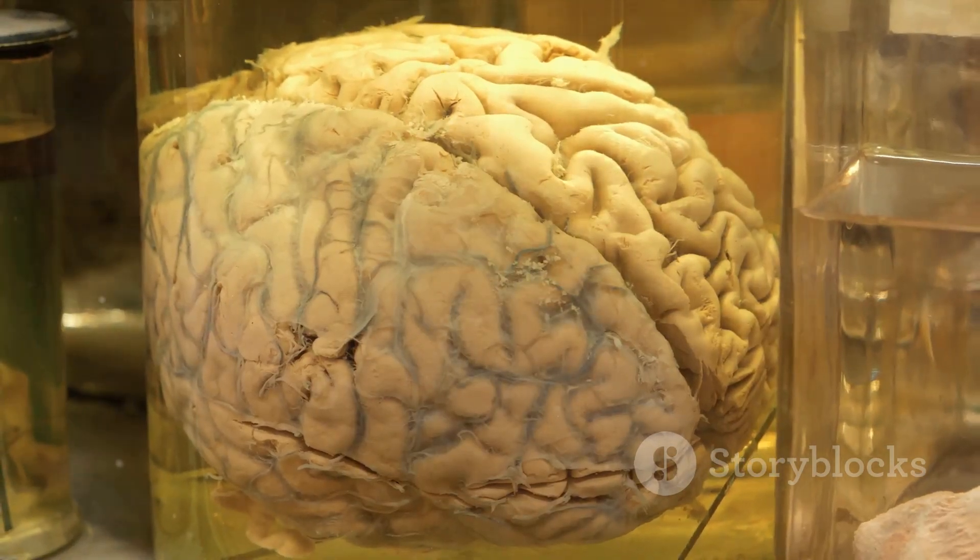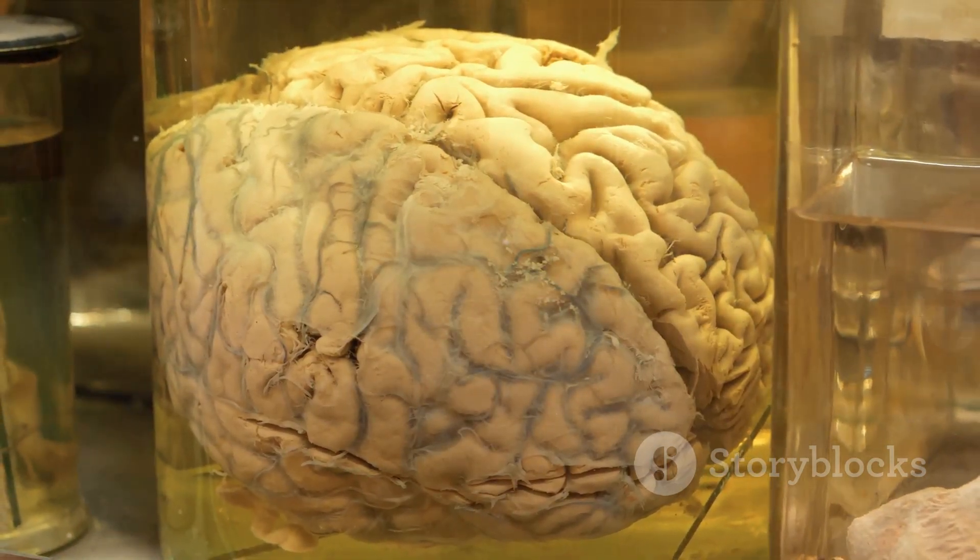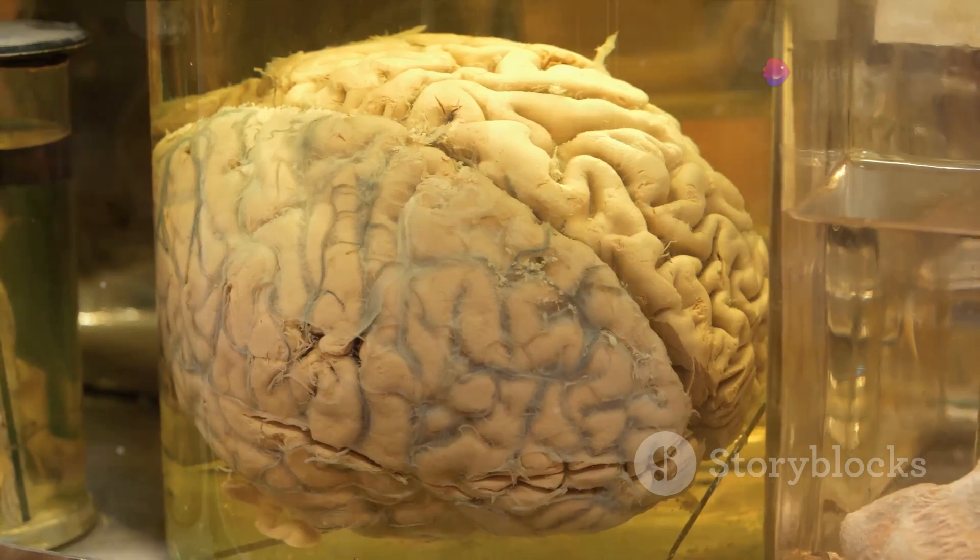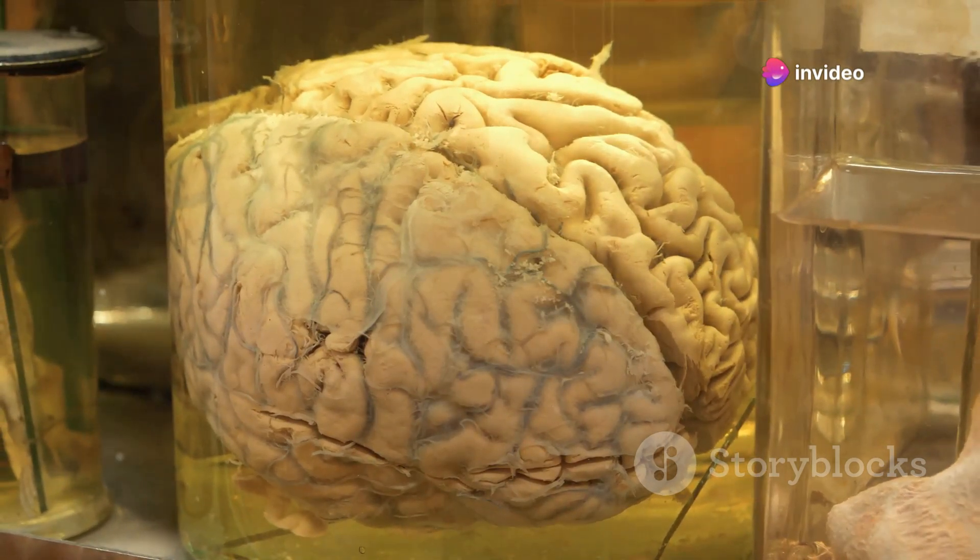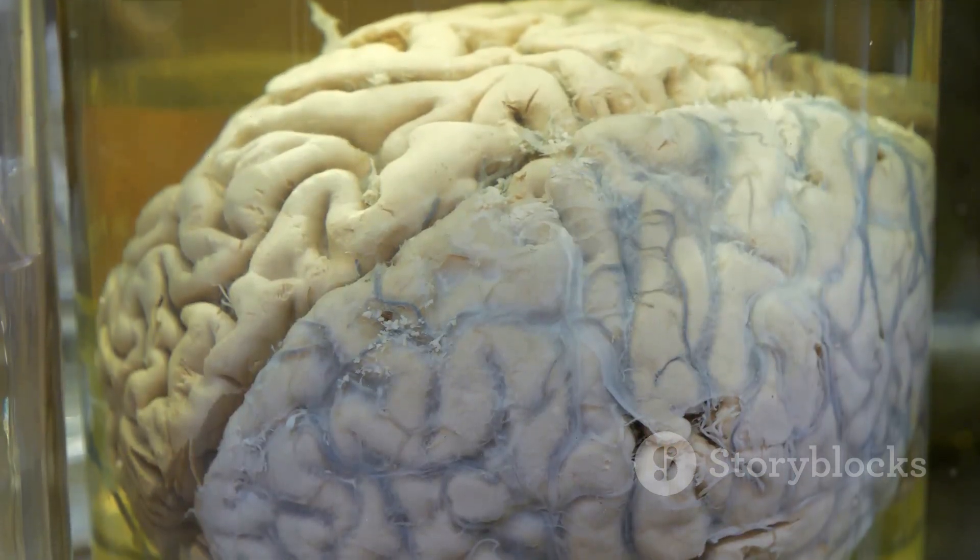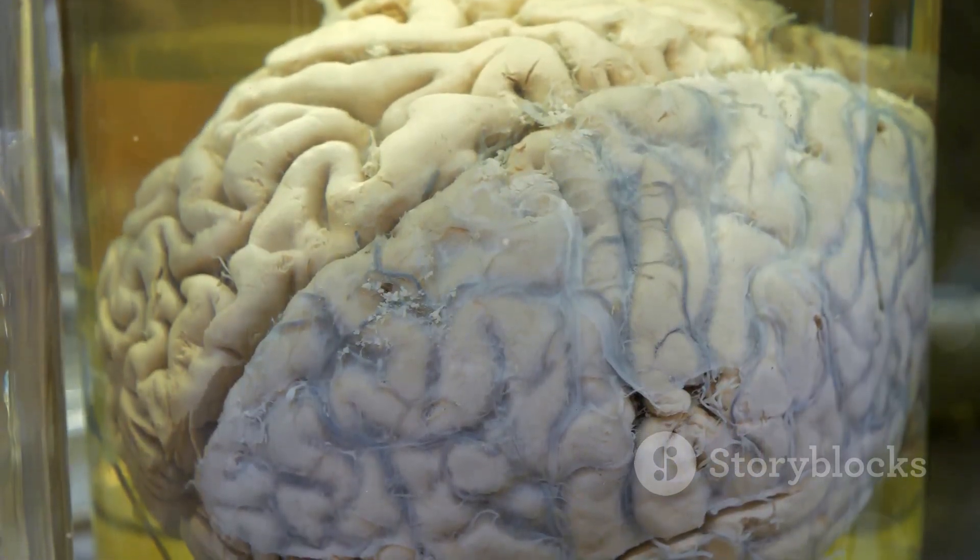Next, our brain takes this encoded information and begins to store it. This is known as the process of consolidation. Think of it as putting that written note into a filing cabinet for later use. The brain doesn't store all memories in one place. Instead, it cleverly disperses them across various regions.